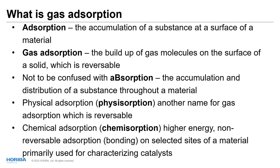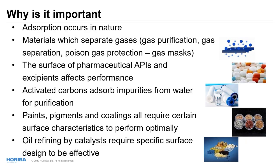Chemical adsorption, or chemisorption, is a much higher energy, non-reversible bonding of gas molecules on selected sites of a material, primarily used for characterizing catalysts. For example, in an oil refinery a catalyst might be platinum metal dispersed on an aluminum support. Physical adsorption would reveal total surface area, but chemisorption would bond gas molecules only to the platinum, allowing us to determine the platinum surface available for reaction.